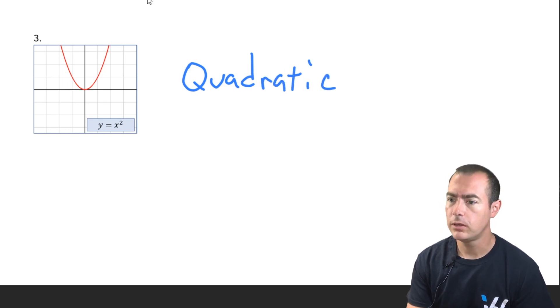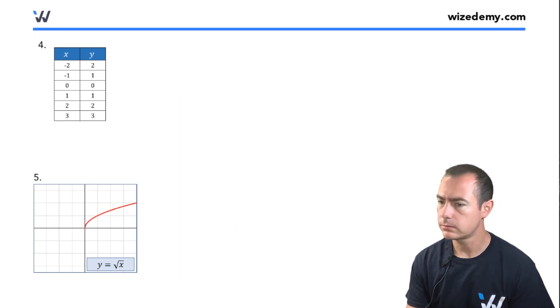We have a couple more. Let's see what we have for those. This next one is another table. Looking at the x and y values, they're not the same. Sometimes they are, but not always. It seems that for the negative values, they turn positive.